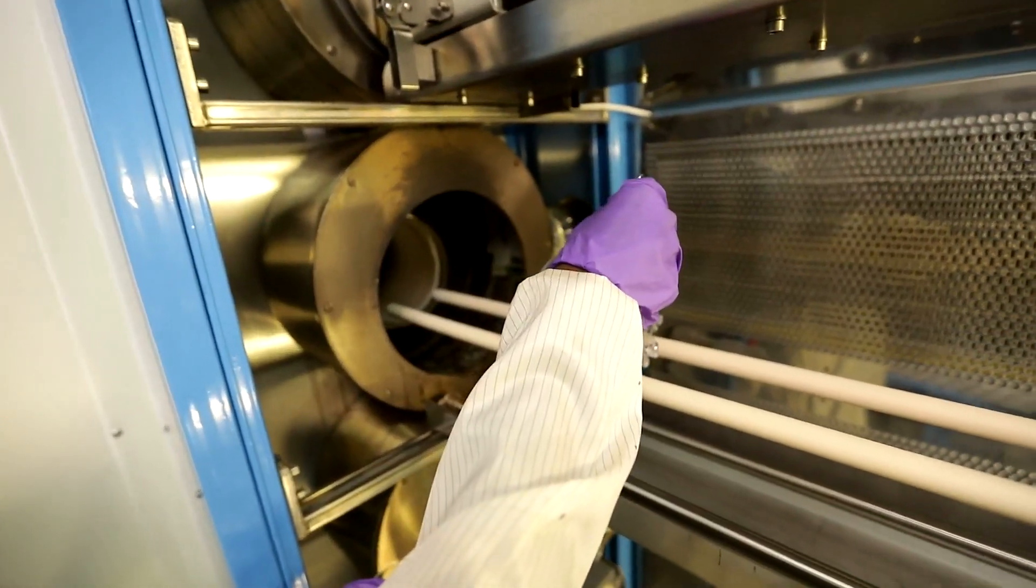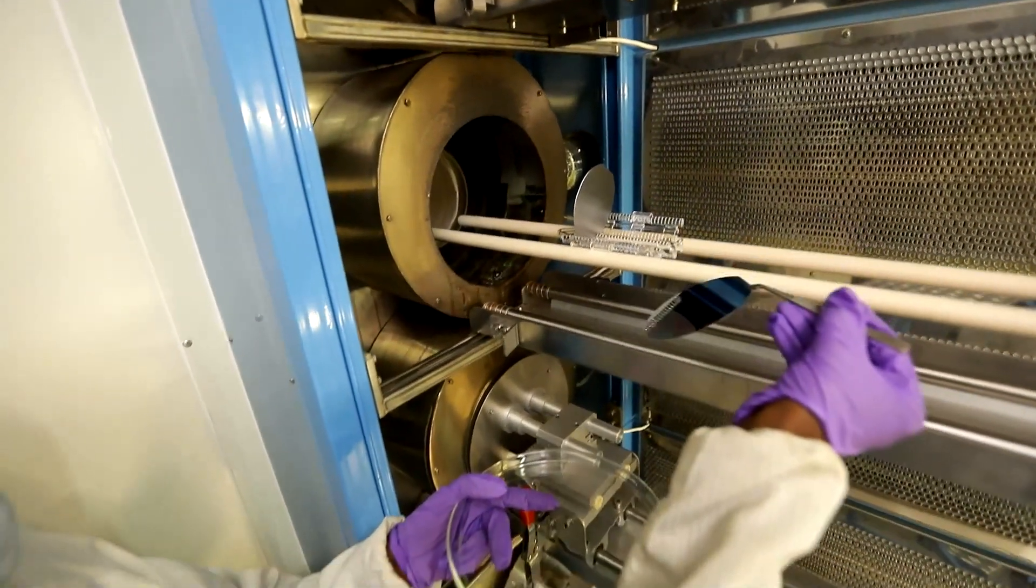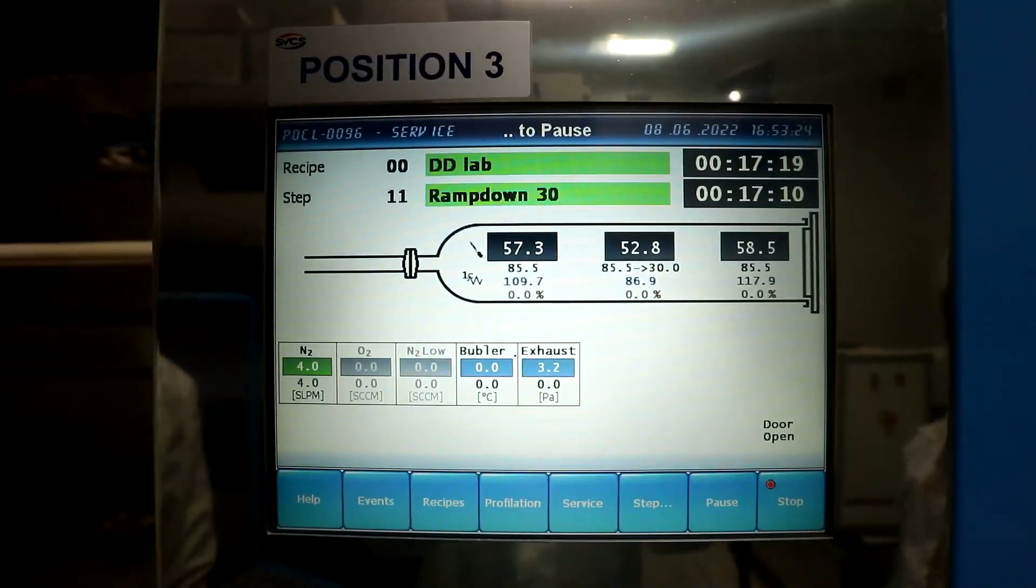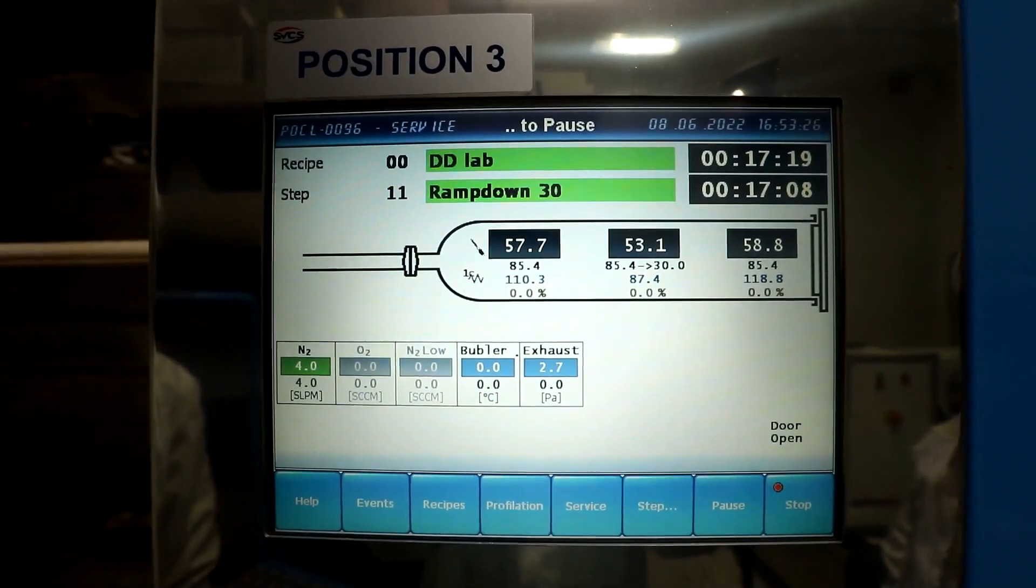Next we will bring down the temperature to 30 degrees Celsius. It will take around two hours. At the end of the process, close the processing window and turn off the breaker. Close the gas lines and switch off the chiller and exhaust.